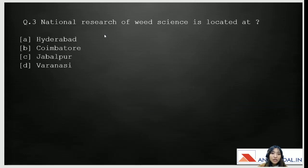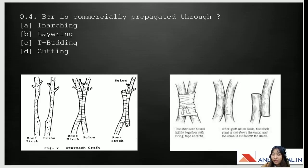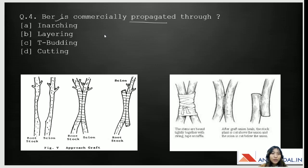For the third question — the national research center of wheat science is located at — please answer in the comments section. Question four is on propagation: ber is commercially propagated through — A) inarching, B) layering, C) T-budding, or D) cutting. There are various types of propagation — asexual and sexual. The answer for this is T-budding.